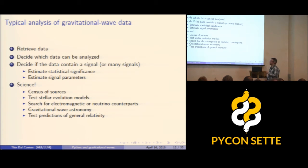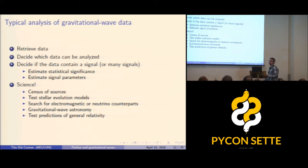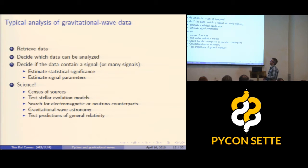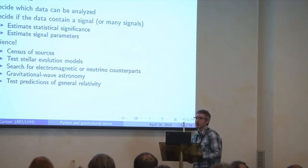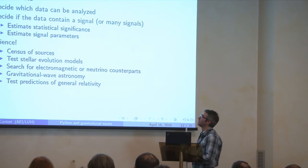There is a typical scheme we use to analyze this data: retrieve data from the frame files, carry out analysis to decide if there is a signal, decide which data can be analyzed since sometimes data is corrupted by instrument malfunction or earthquakes, estimate the statistical significance of candidates, and if the significance is high enough, consider it a gravitational wave signal. Then we estimate the parameters of the signal — masses of stars, distance to the source — by comparing the data with a model.